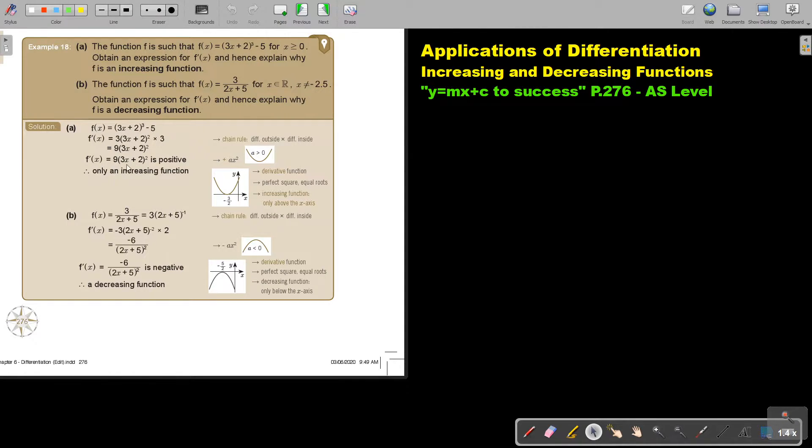Now why is this an increasing function? This is positive, it's a positive ax square. So it means the graph will look like this. Because there's a square it means the roots will be equal. So there is the root and it will go up. So this whole function will just be above.